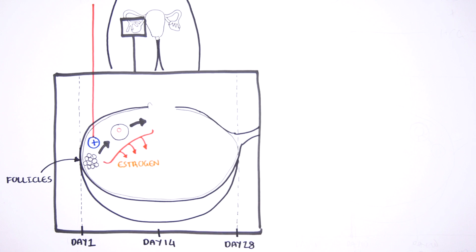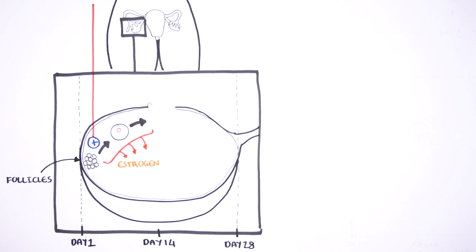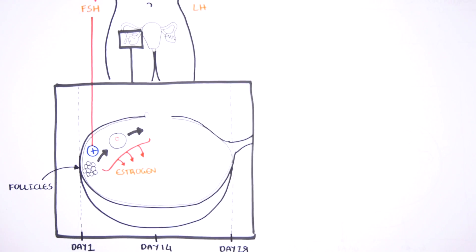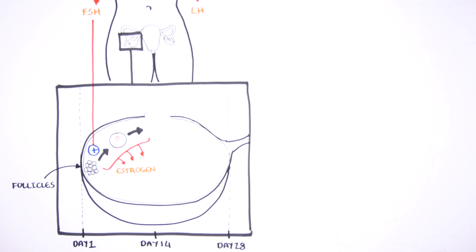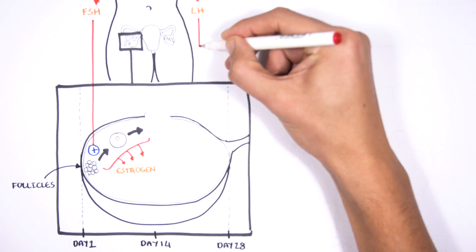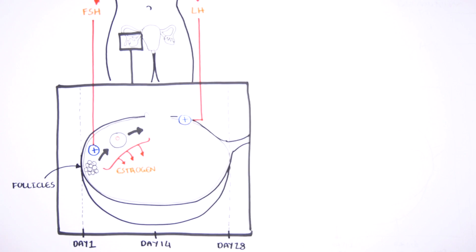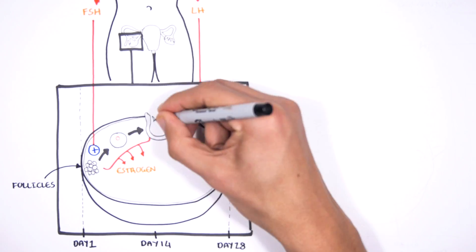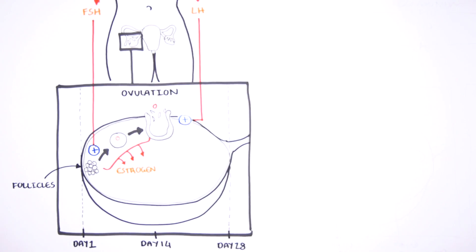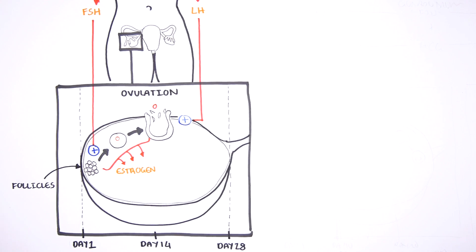By day 14 of the menstrual cycle, estrogen levels are so high that they will stimulate luteinizing hormone release from the pituitary gland. With luteinizing hormone being released, it will trigger ovulation of the most developed follicle in the ovary. The follicle ovulates, releasing an egg.